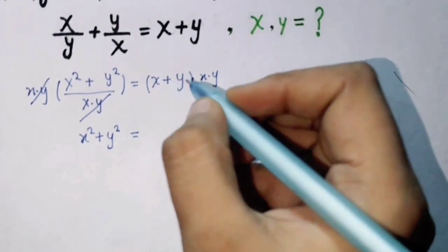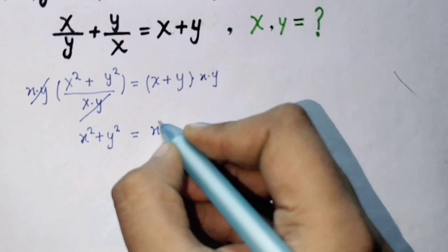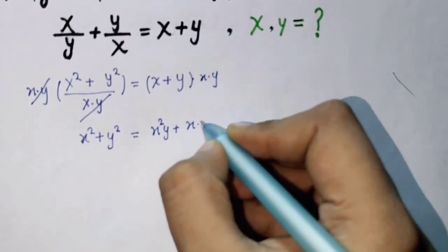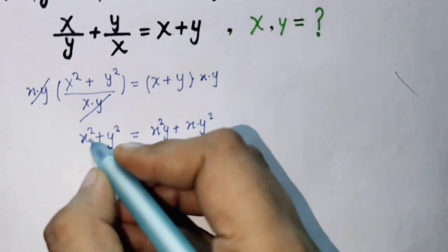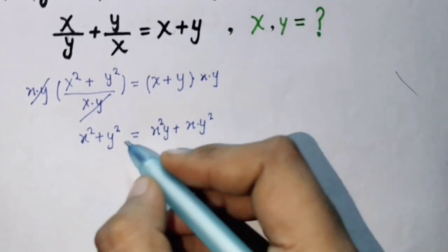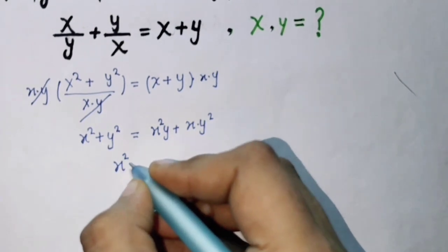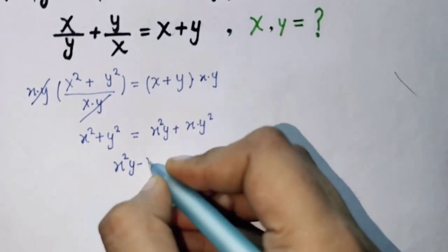So we get x squared y plus x times y squared. X squared take the right side and also y squared take the right side, so we get x squared times y minus x squared plus x y squared minus y squared equals zero.